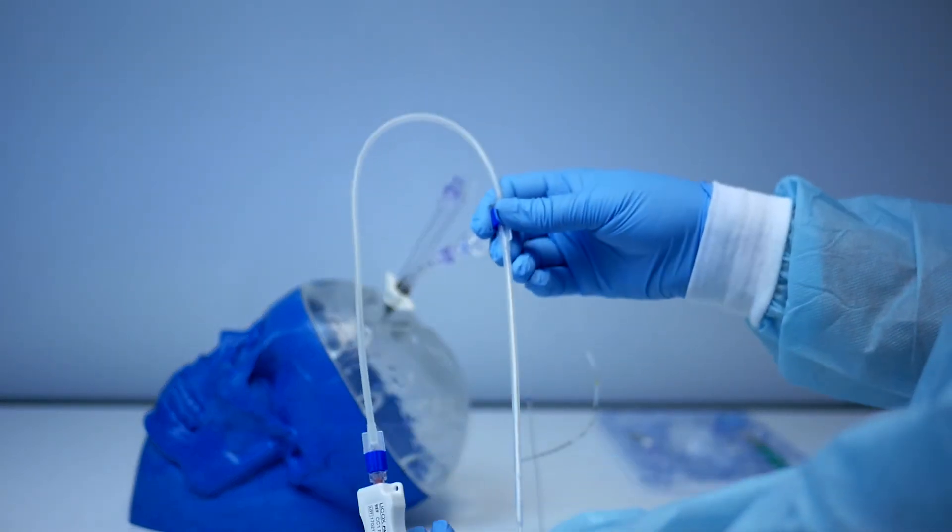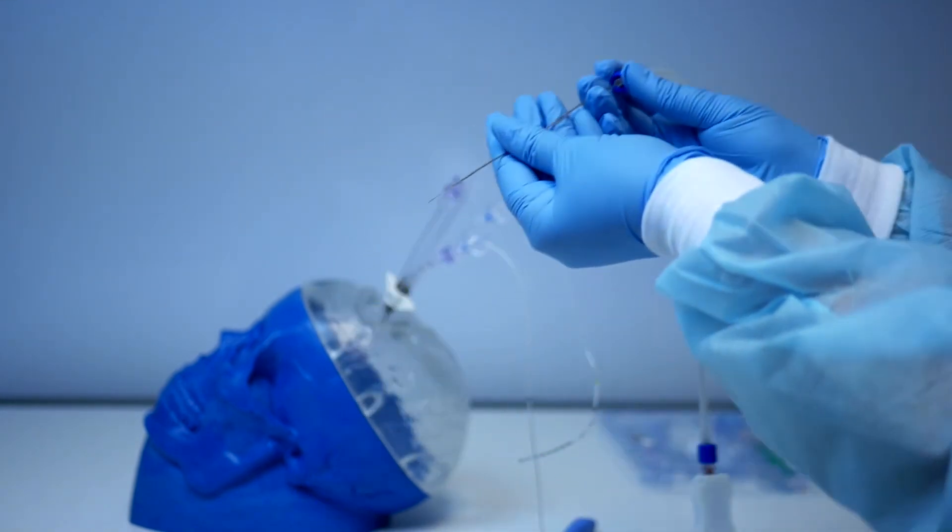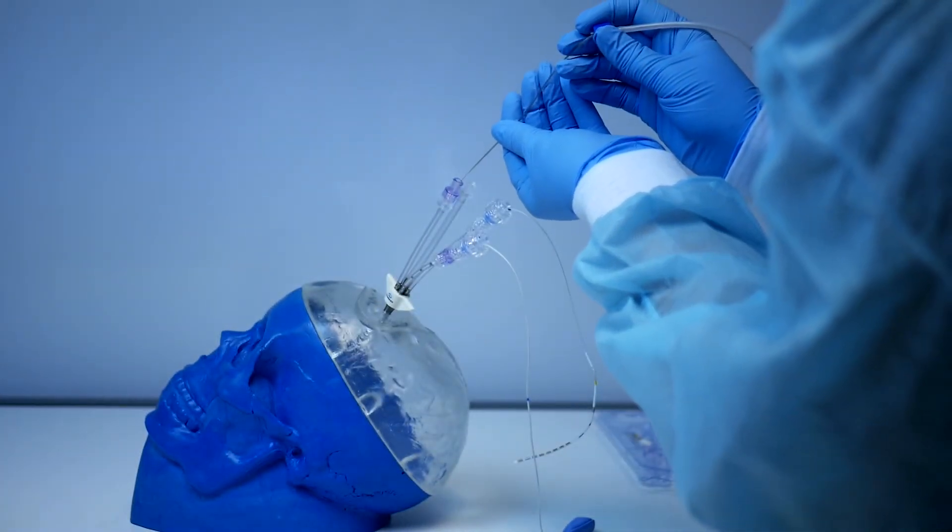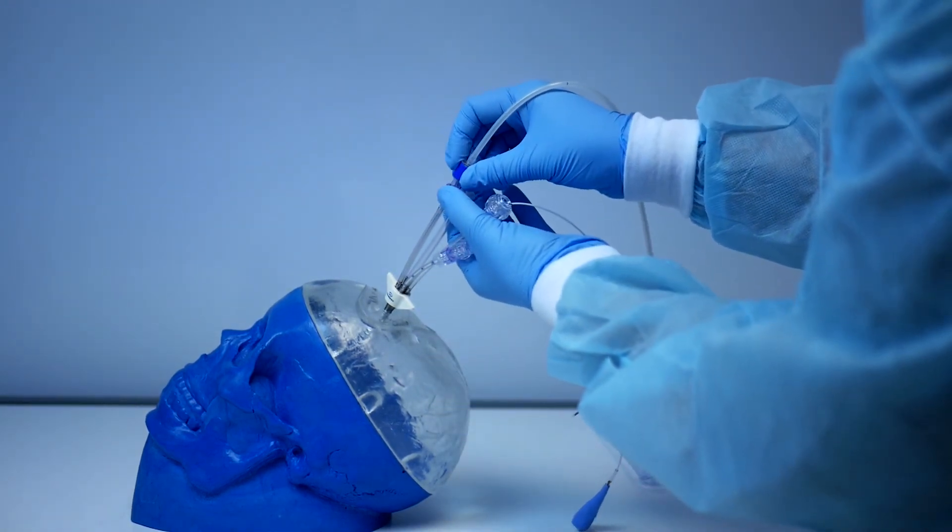Take the Lycox probe, remove the plastic sheath, insert probe through the introducer, and secure the lure lock connection by turning clockwise.